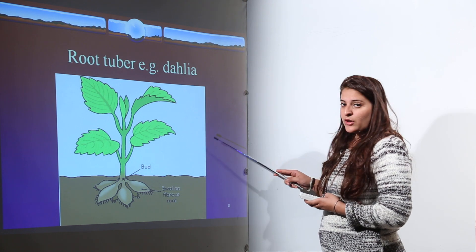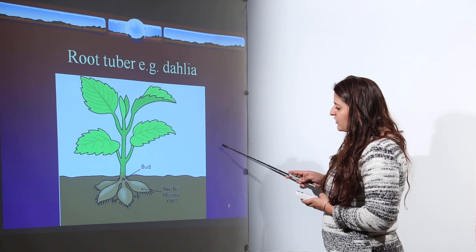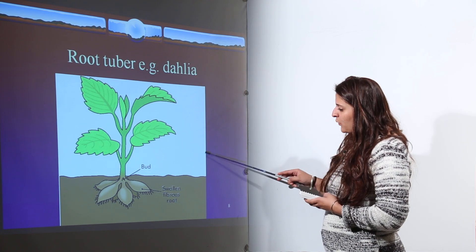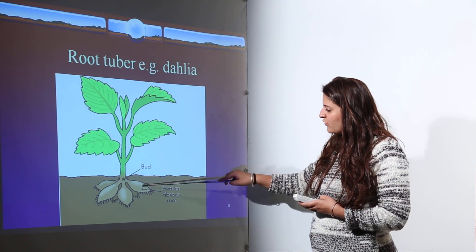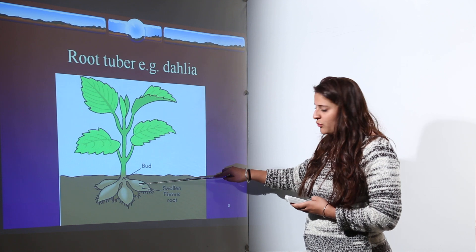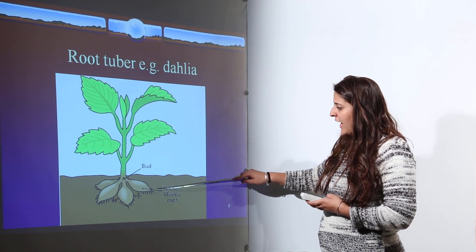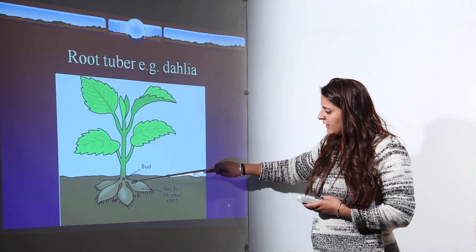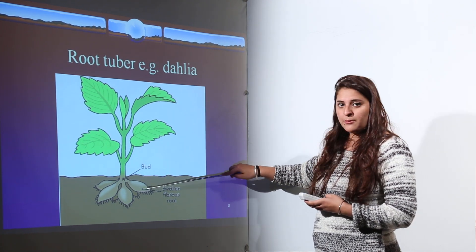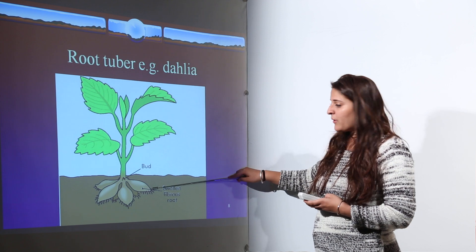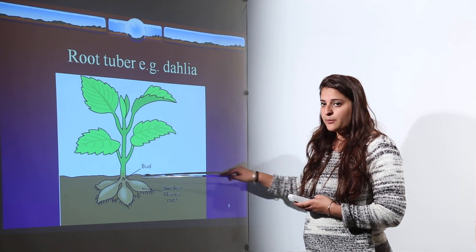One example of a root tuber is dahlia, where a swollen fibrous root gives rise to a root system, and this root system completely develops from a single bud.